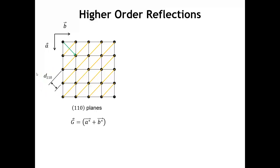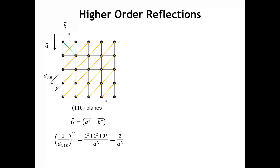The reciprocal space lattice vector perpendicular to these planes would be A-star plus B-star, since H = 1, K = 1, L = 0. The length of this lattice vector depends on the values of A and B — here drawn for a lattice where A, B, and C are all one. If those vectors were longer, the reciprocal space vector would be shorter but would still have the same direction and remain perpendicular to these lattice planes. Using the formula we derived, and plugging in 1 for H, 1 for K, and 0 for L, then solving for the interplanar spacing, we get D₁₁₀ = A divided by square root of 2.